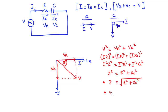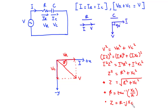The phase angle is given by the inverse tangent of XC divided by R, which is the phase angle between the current and the supply voltage. The impedance in rectangular form is Z equals R minus jXC. An important note: in a series RC circuit, even though the current leads the voltage, it will not be by 90 degrees — it will be less than 90 degrees.